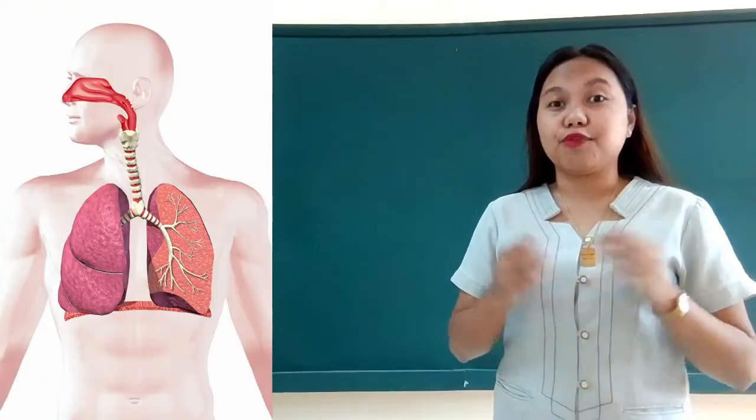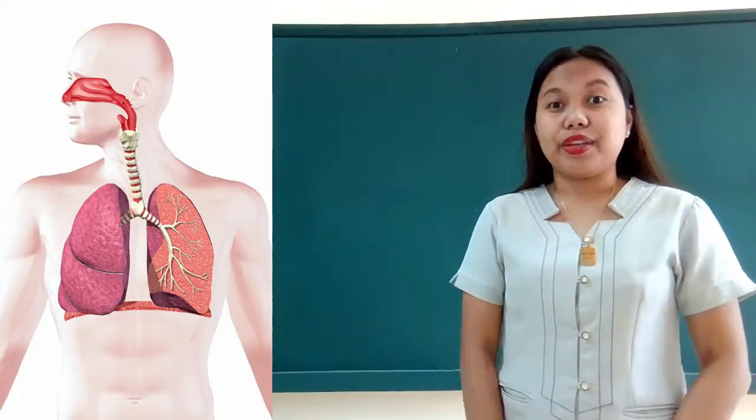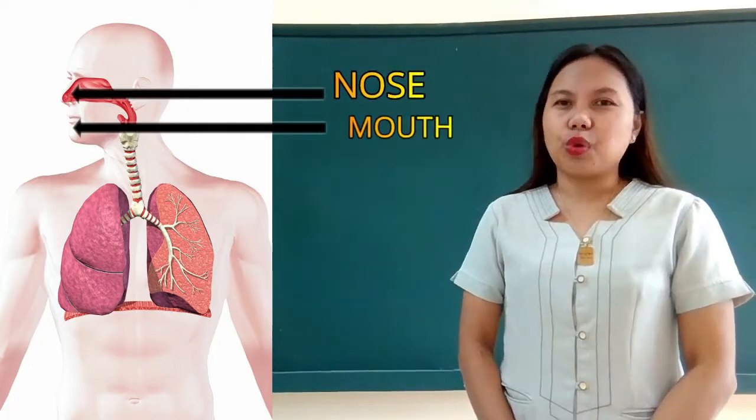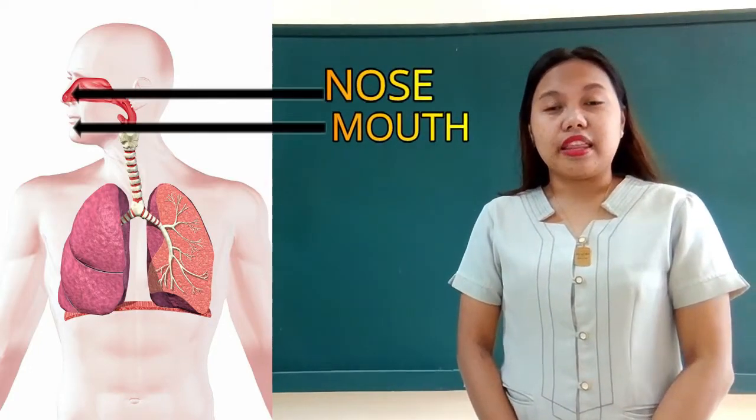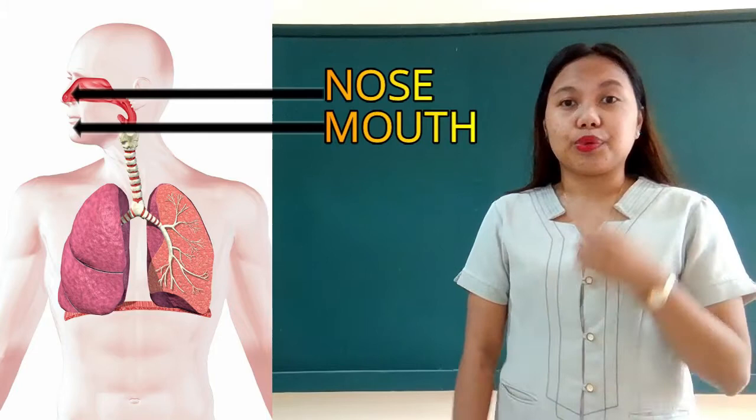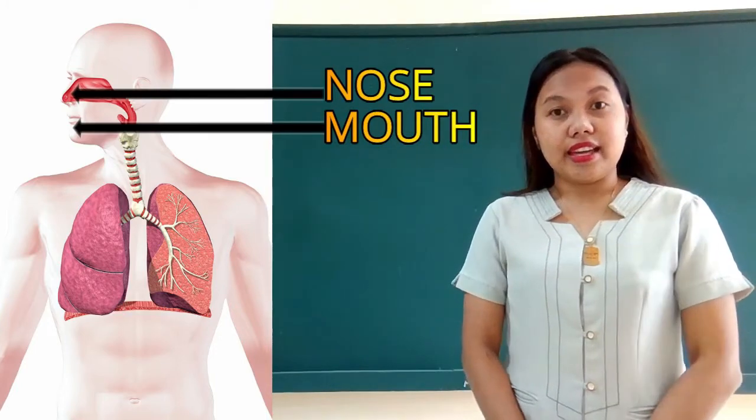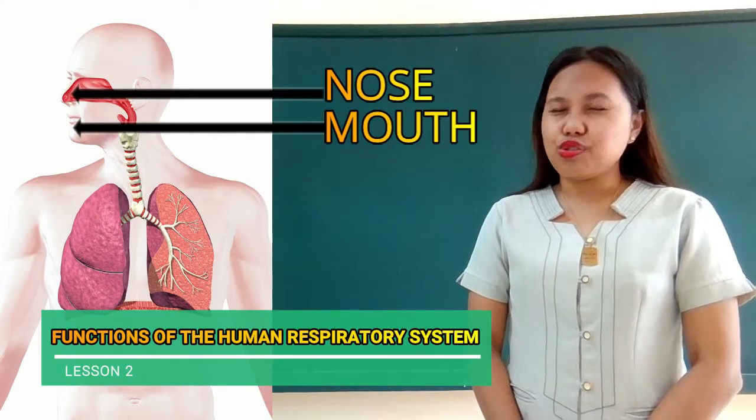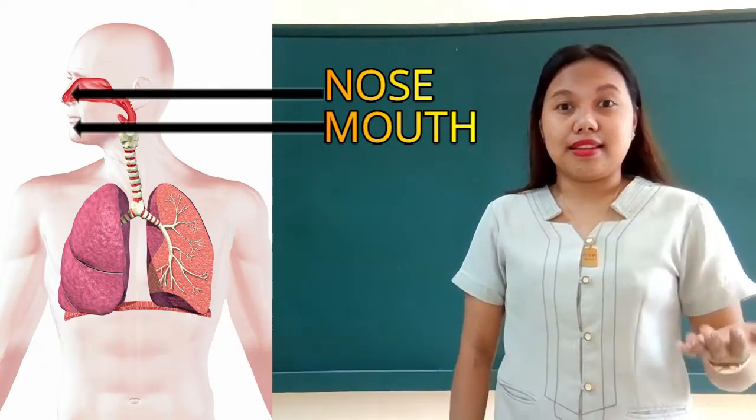The first part in a human respiratory system, remember, we have two passageways for the air to enter. We have the nose, the mouth. If in case we have colds or runny nose, then we can breathe using our mouth. And if we have no runny nose, of course, we usually use our nose to breathe in for air.